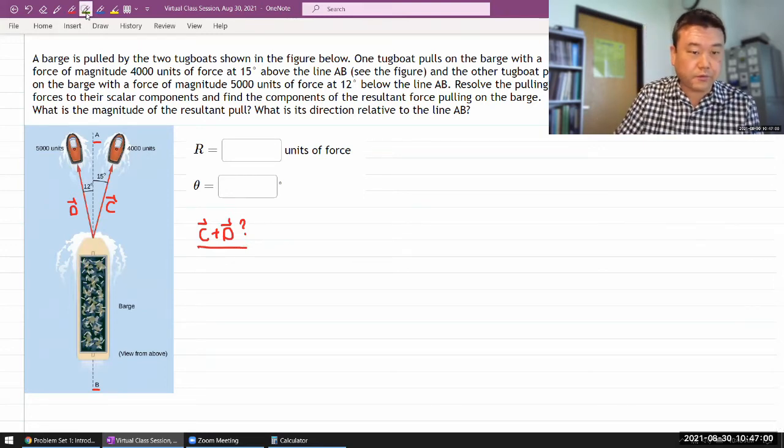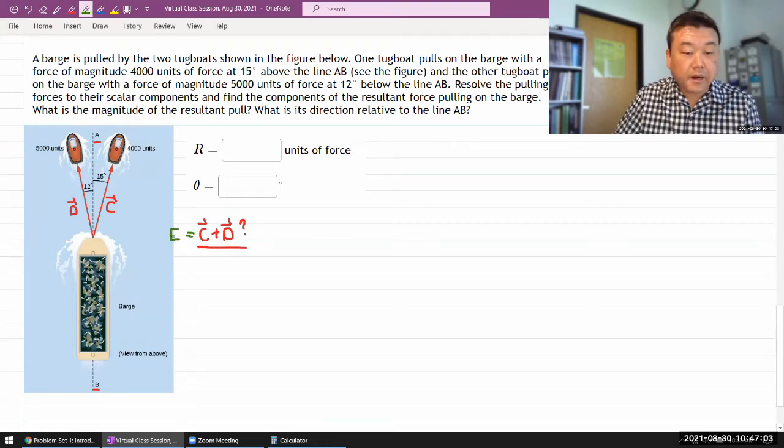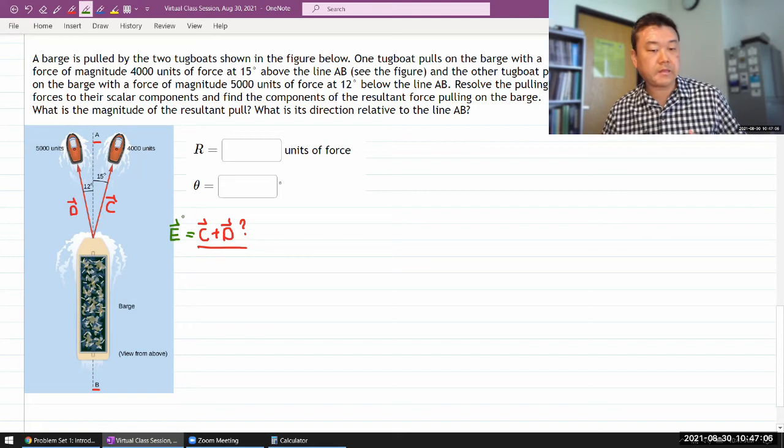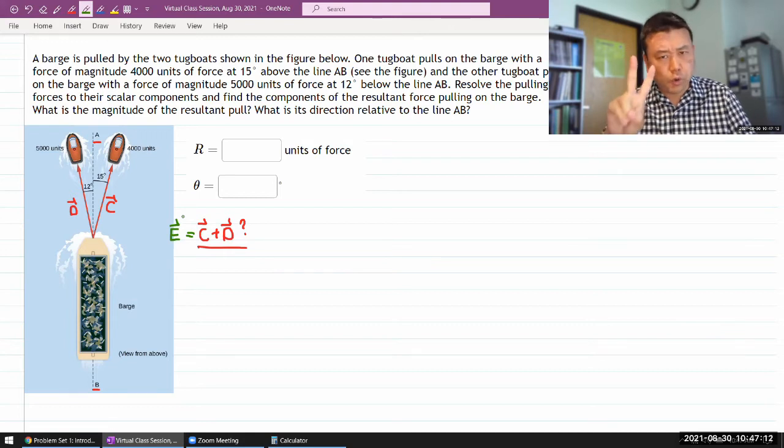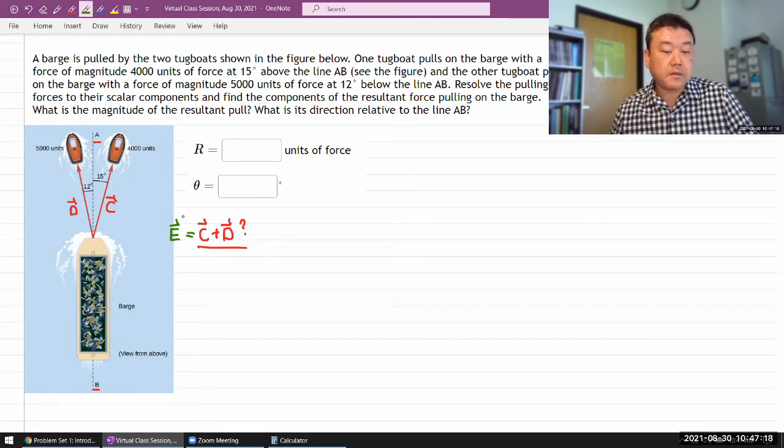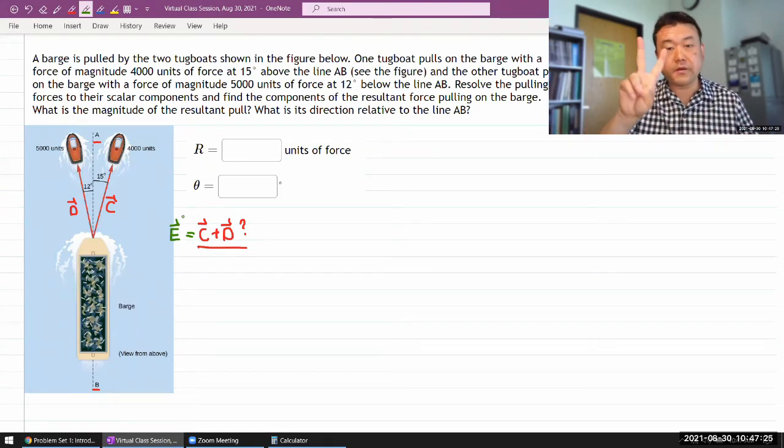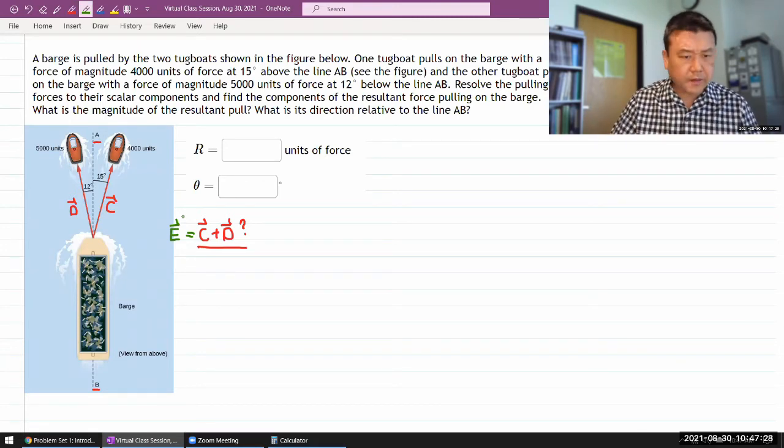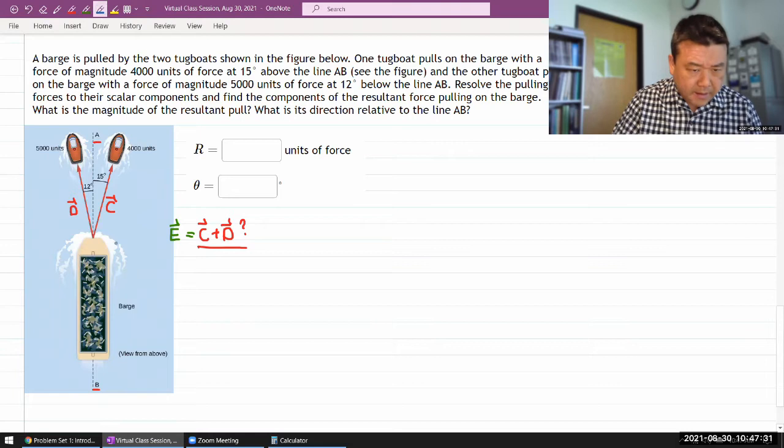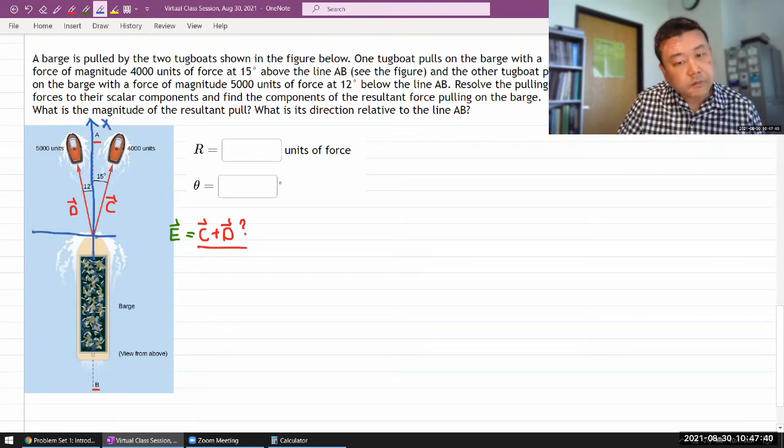Once you have these vectors, like vector C plus D—I guess I could call that vector E—there are different ways of specifying those vectors. One thing to remember about two-dimensional vectors is that it will always take two parameters to fully specify two-dimensional vectors. So you can give those parameters in terms of components. Here, if I define my axis this way, I think the natural axis to define is this direction as my x-direction and this direction—or the way it's saying above and below—I think I want my plus y to be in this direction.